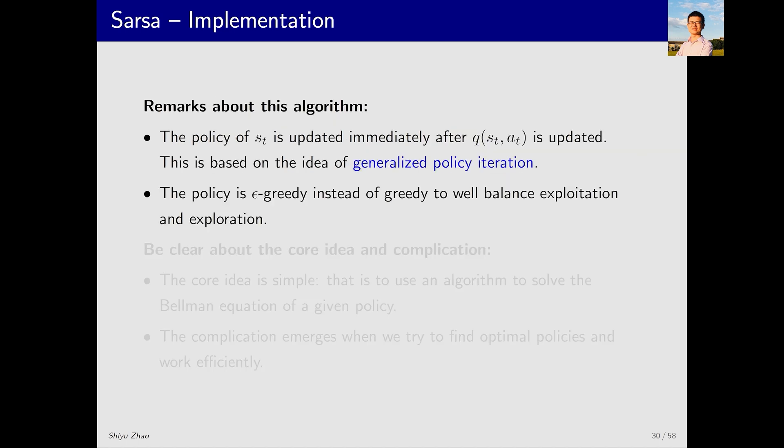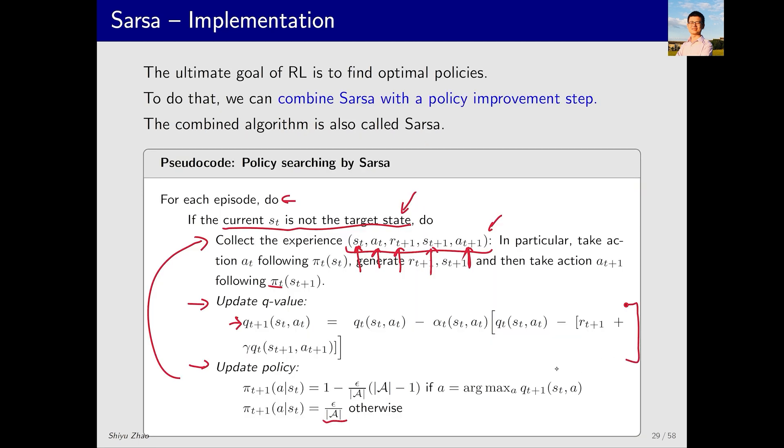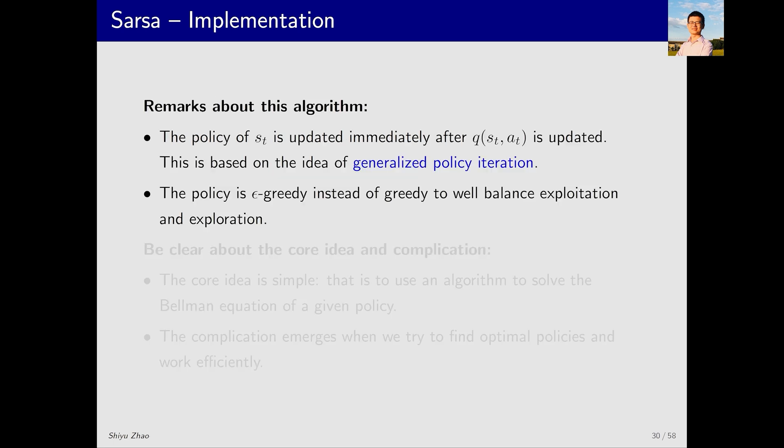One point to note about this algorithm is that it consists of two steps. The first step is the Q value update or policy evaluation. The second step is policy improvement. After updating the Q value, we immediately update the policy. This is slightly different from the traditional policy evaluation process, where we gather a lot of data to accurately estimate the action value for the current policy π_T. In this algorithm, we perform the policy update immediately after policy evaluation, without having obtained an accurate action value. This approach is based on the idea of generalized policy iteration. Recall the policy iteration method we studied earlier. It also consists of two steps: policy evaluation and policy improvement. Each iteration includes both steps. Accurately calculating the state value during policy evaluation requires infinite steps. So in practice, we might only take one or a few steps before switching to policy improvement. The SARSA algorithm follows this same idea.